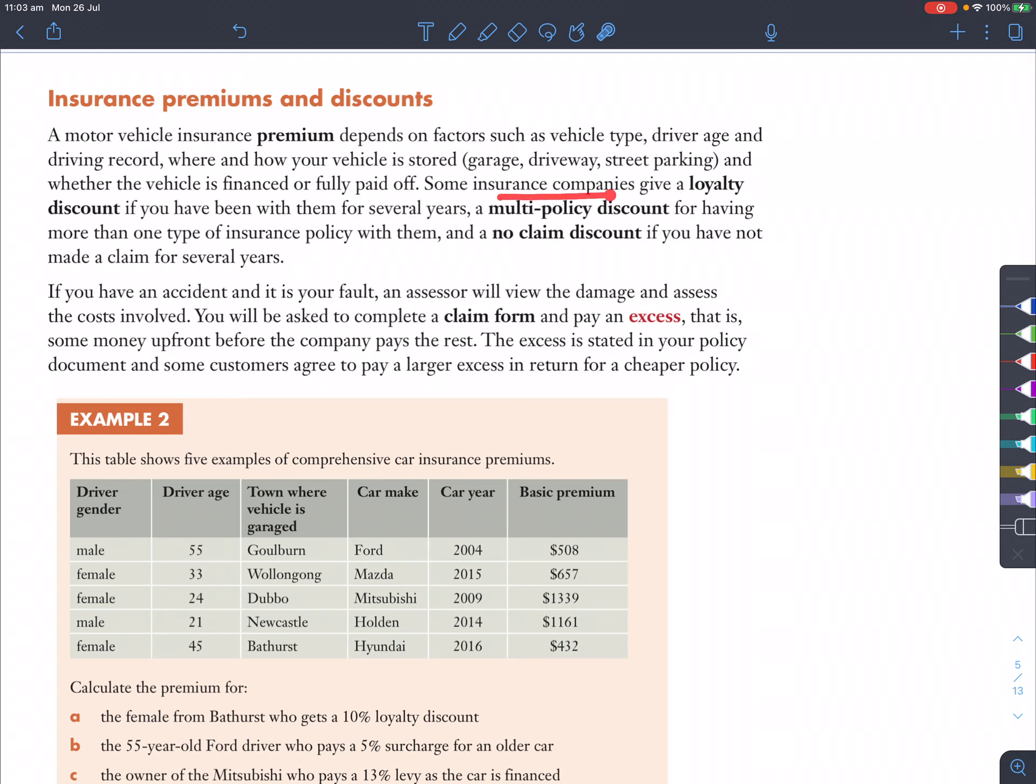Now, some insurance companies give a loyalty discount if you have been with them for several years, and that's good. However, sometimes, even with the loyalty discount, I find that with, let's say, for example, NRMA, they might be the main company that have a lot of customers and they do provide loyalty discounts, but they are way more expensive than Budget Direct, which doesn't provide a loyalty discount and gives a cheaper price. It's like saying you're buying them for the brand.